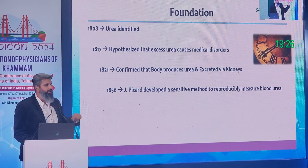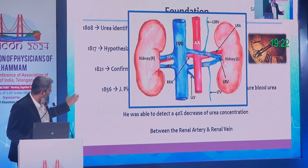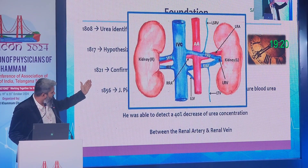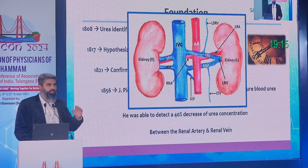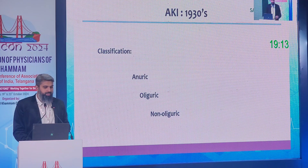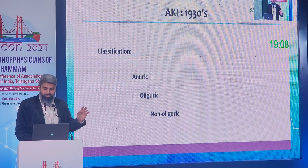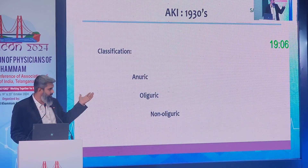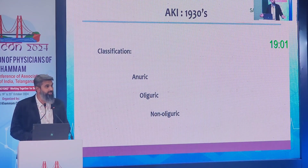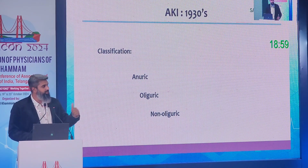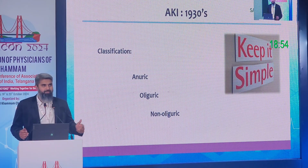Urea was found to be filtered out by the kidneys in 1821, and Picard identified that once blood goes through the renal artery into the kidney, 60% of urea is reduced when it comes out through the renal vein. If the output is less, that indicates kidney dysfunction rather than urea clearance. This was the initial classification of AKI and is still used in the ICU — whether you are anuric, oliguric, or non-oliguric.